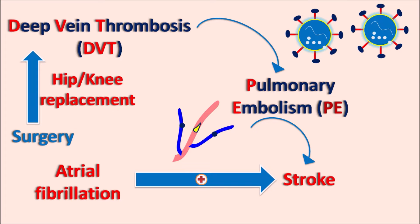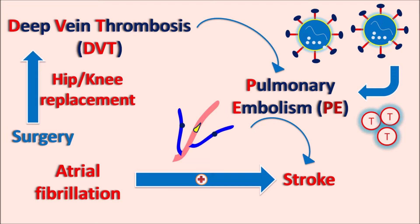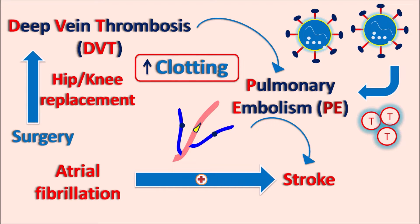Viral infections can stimulate the immune system. By stimulation of T-cells, they can produce a sudden surge resulting in a cytokine storm, which produces an inflammatory response that increases clotting, resulting in pulmonary embolism. COVID-19 infection is one example where inflammation stimulated by T-cells results in excessive clot formation which may lead to pulmonary embolism. All these conditions can be treated using blood thinners like apixaban.